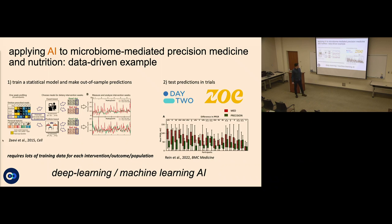A great example of the statistical AI approach is work from Ron Segal and Eran Elinav's group. They had an Israeli population, collected data on diet, microbiomes, and clinical markers, and used a random forest model to predict optimal diets. They were tracking post-meal glucose response and could design optimal diets that made blood glucose spike less, and bad diets that made it spike more — pushing people more towards pre-diabetes and diabetes.